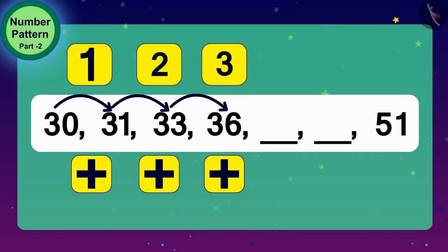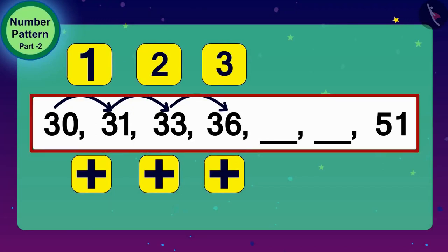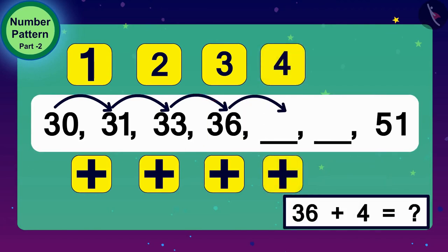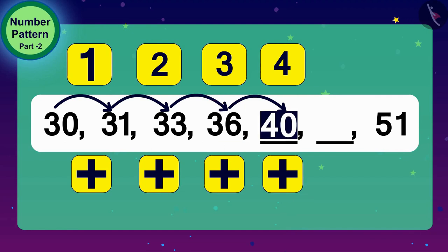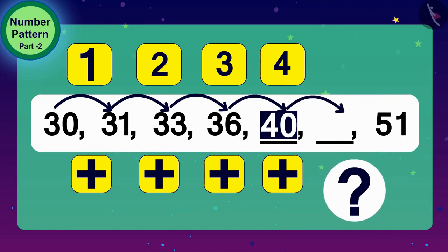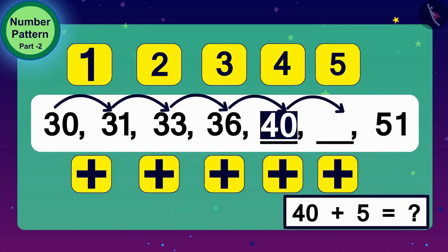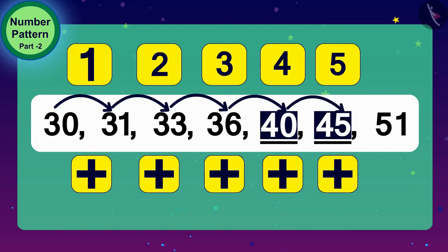So, what do we need to do to continue this number pattern? We have to add 4 to 36 — this gives us 40. And what shall we do to get the next number? Add 5 to 40 — that gives us 45. We filled in the blanks of this increasing number pattern.